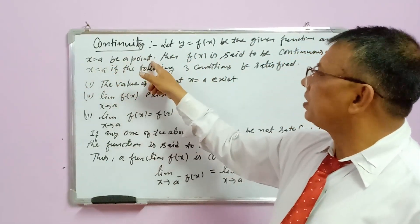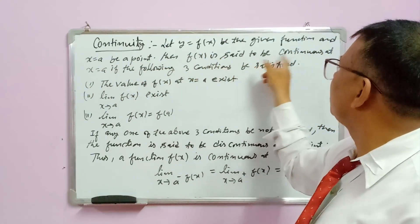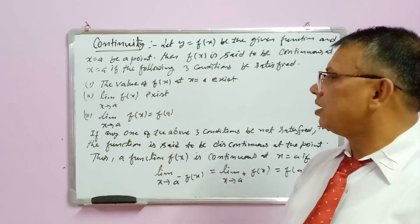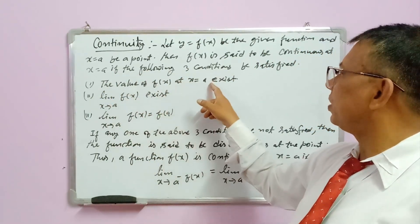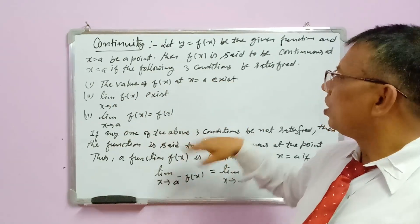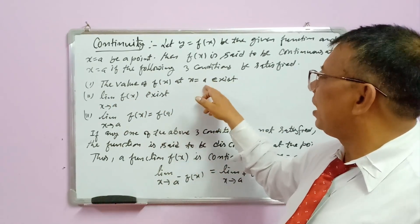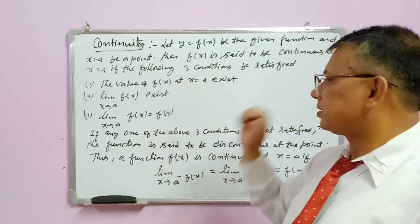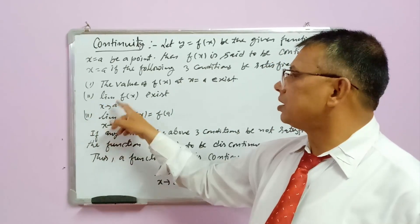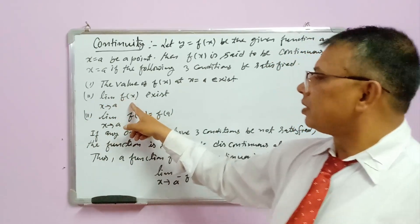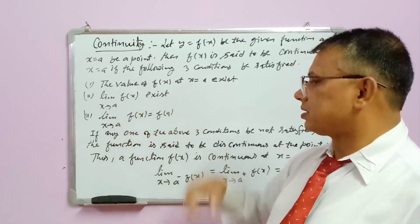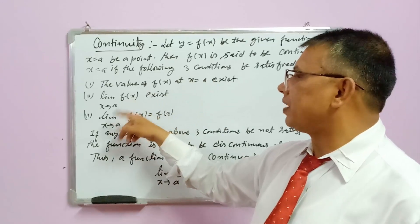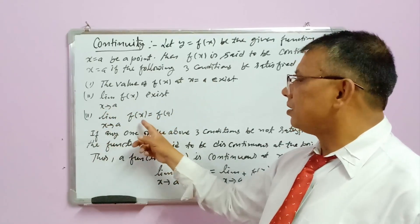The function f(x) is said to be continuous at x = a if the following three conditions are satisfied. First, the value of f(x) at x = a exists — meaning putting x = a in the given function gives a defined value. Second, the limiting value of f(x) as x tends to a exists. Third, the value of f(x) at x = a and the limiting value of f(x) at x = a must be equal.